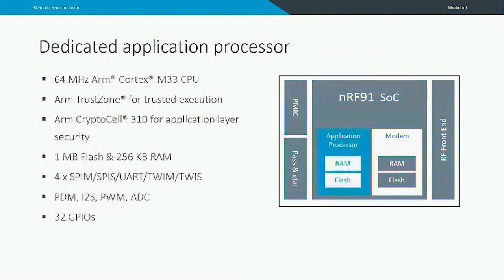A few more details about the application processor — this is where you put your application, your code, connect your sensors, and do your work. We have a 64 MHz ARM Cortex-M33 CPU, ARM TrustZone for trusted execution, and an ARM CryptoCell for application-layer security and acceleration of cryptographic functions. We have 1 MB of flash and 256 KB of RAM. We have four instances where you can choose between SPI master/slave, UART, and two-wire master and slave. We also have other digital interfaces like PDM, I2S, PWM, and a 12-bit ADC, and a total of 32 GPIOs available.